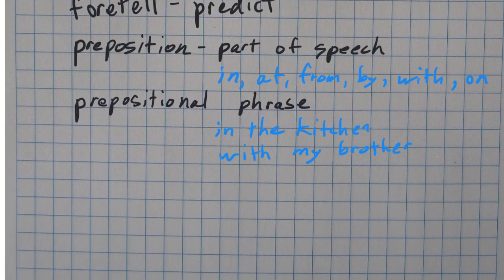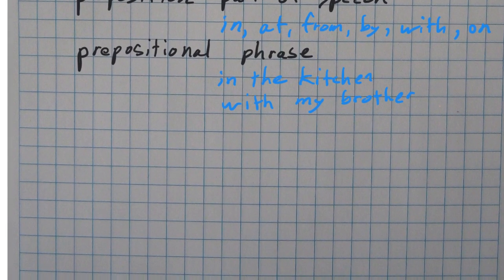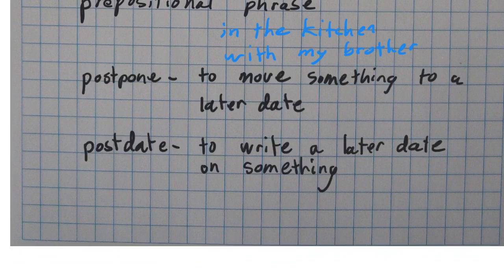So you might know postpone, but just in case, it's to move something to a later date. And postdate is when you write a later date on something because you won't be using it until later.